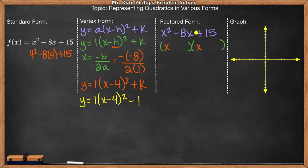So what two numbers could I multiply together and get positive 15? But when I add those numbers, I get negative 8. And that would be negative 5 and negative 3. So here my factors are (x minus 5) and (x minus 3).